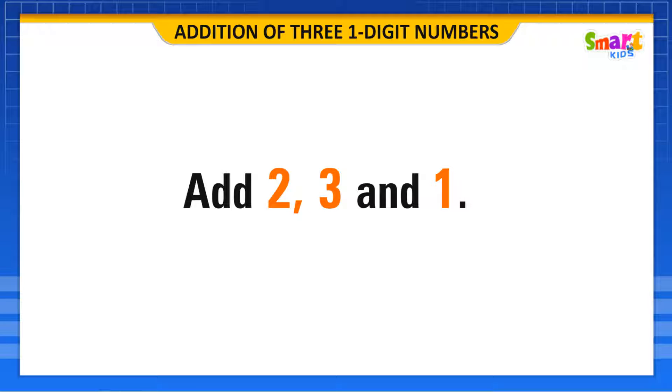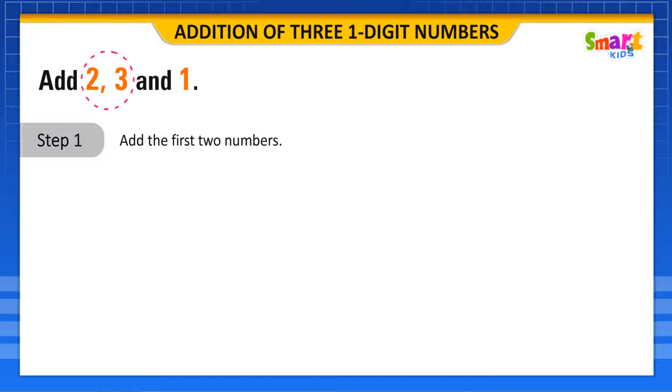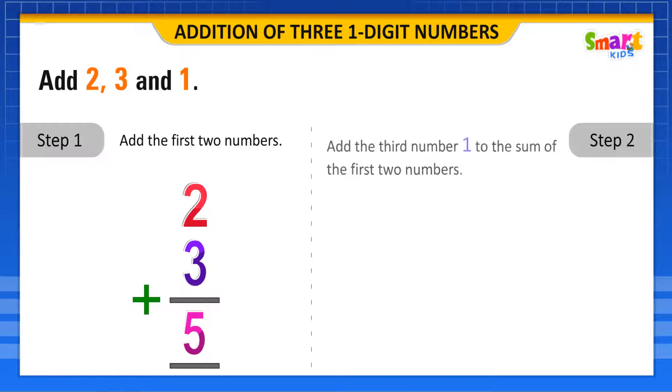Add 2, 3 and 1. Let us add the first two numbers, 2 plus 3 is equal to 5. Now, add the third number 1 to the sum of the first two numbers, which is 5.